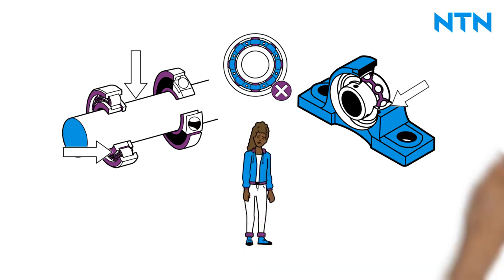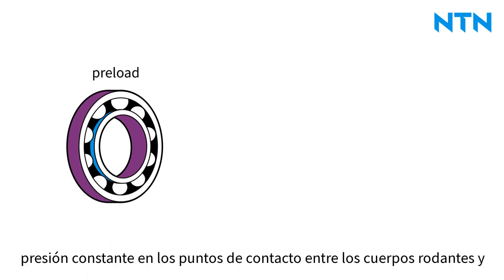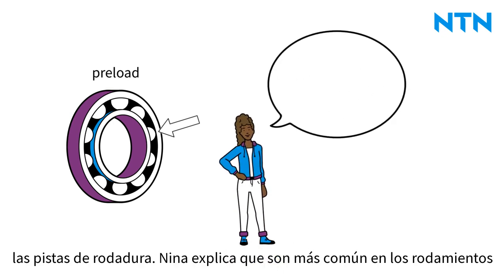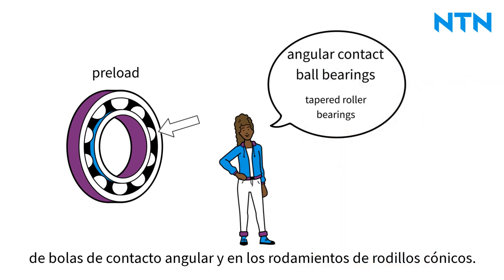Some bearings require a preload. This ensures that there is constant tension at the points of contact between the rolling elements and the raceways. Nina explains that they are most common in angular contact ball bearings and tapered roller bearings.